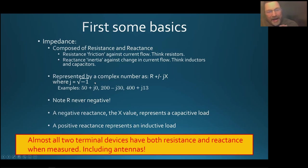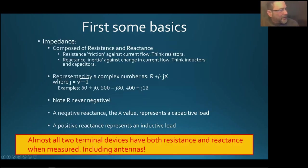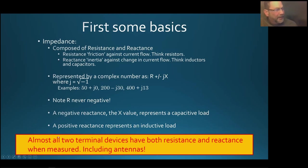J is called imaginary because you can't have a square root of minus one — that's where the term imaginary comes from. Here are some examples: 50 ohms plus no reactance is a pure resistance; 200 plus a little capacitive reactance; and one with some inductive reactance. Resistance can never be negative. Reactance can be negative — in that case it represents a capacitive load — and a positive reactance represents an inductive load.